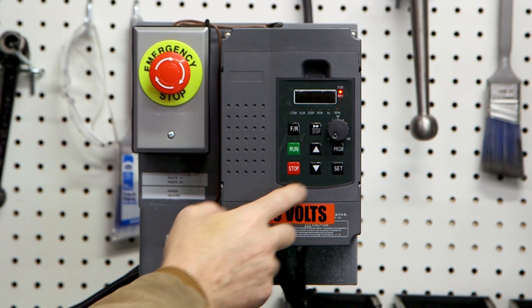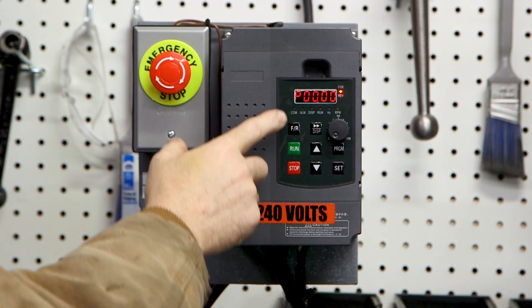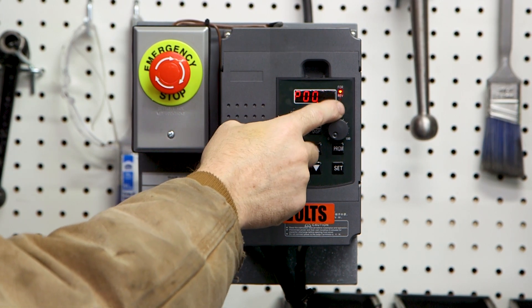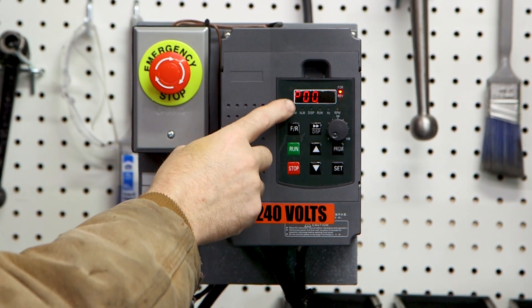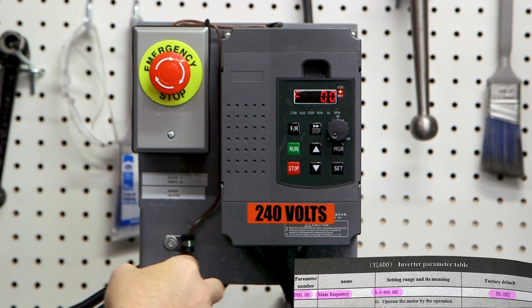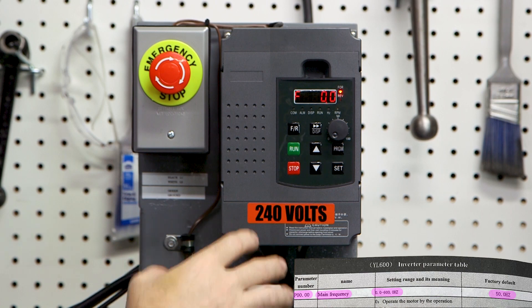So to program this VFD, we select program and we're going to get that P number I mentioned. So this is parameter 0000. And in the book, it said this was the main frequency. So this is the main frequency of our power coming in. So in the US, it's 60 hertz.